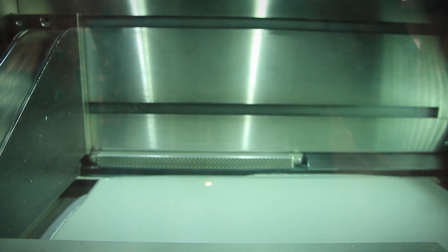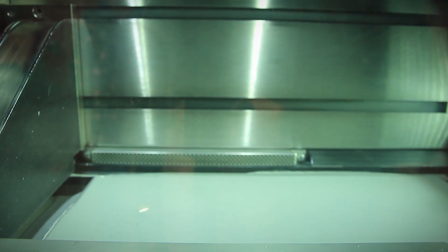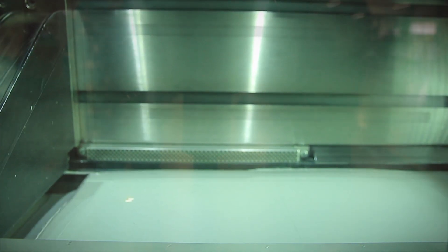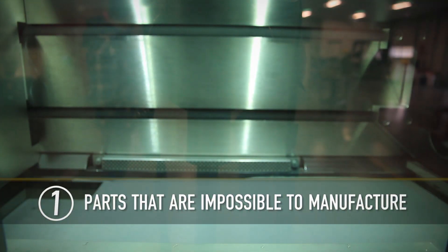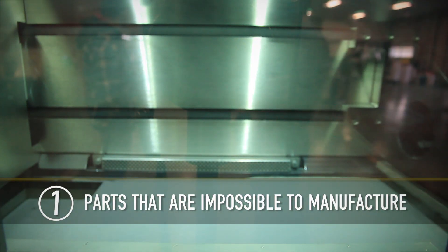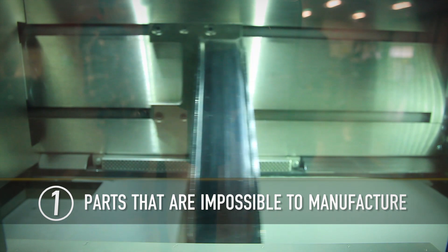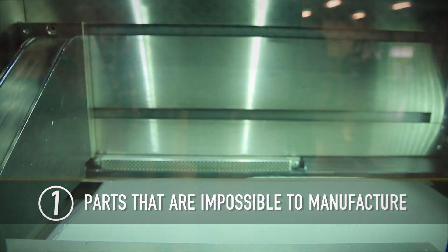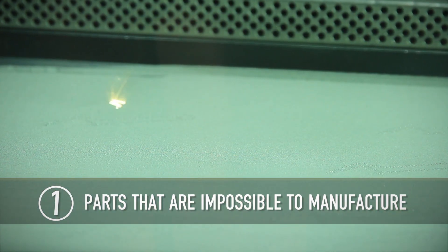Metal additive manufacturing provides a number of benefits over traditional manufacturing, including the ability to create parts and structures that are impossible to manufacture with traditional methods, parts with intricate internal structures, or complex organic shapes, for example.